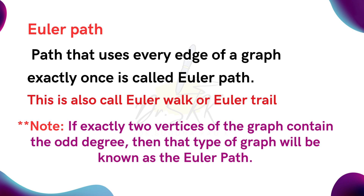An Euler path is a path that visits each and every edge of a graph exactly once. Similarly, a walk that visits each and every edge of a graph exactly once is known as an Euler walk. A trail that visits each and every edge of a graph exactly once is called an Euler trail.